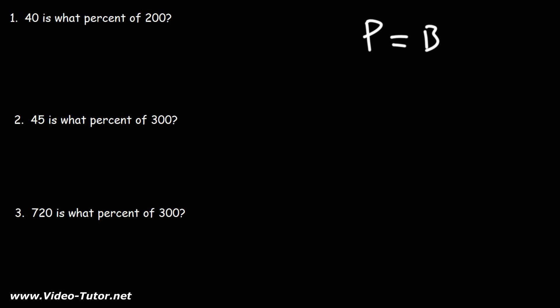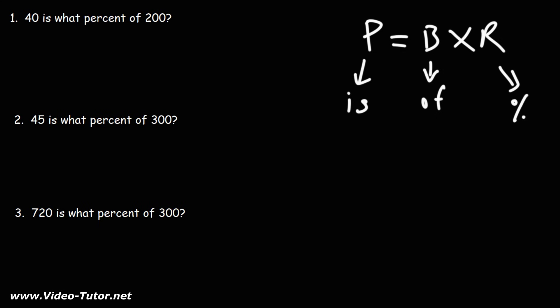In this video we're going to talk about how to calculate percentages using the percent formula. For the first problem: 40 is what percent of 200? We can use this formula: the part is equal to the base times the rate. The base is usually — not always, but usually — the large number, and it's typically associated with the word 'of.' The part is usually the small number, and it's the number associated with the word 'is.' The rate is the percentage. For each of these three problems, we want to calculate the percentage.